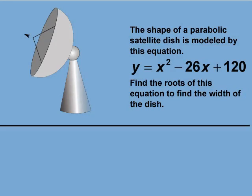Let's start with an example. The shape of a parabolic satellite dish is modeled by this equation, y equals x squared minus 26x plus 120. Find the roots of this equation to find the width of the dish.